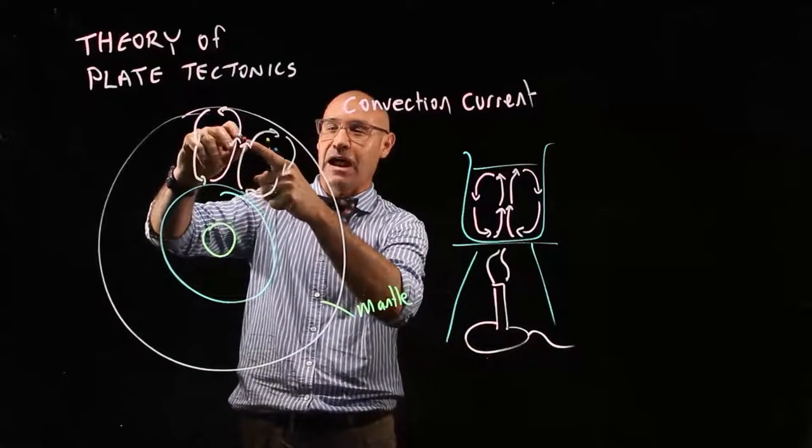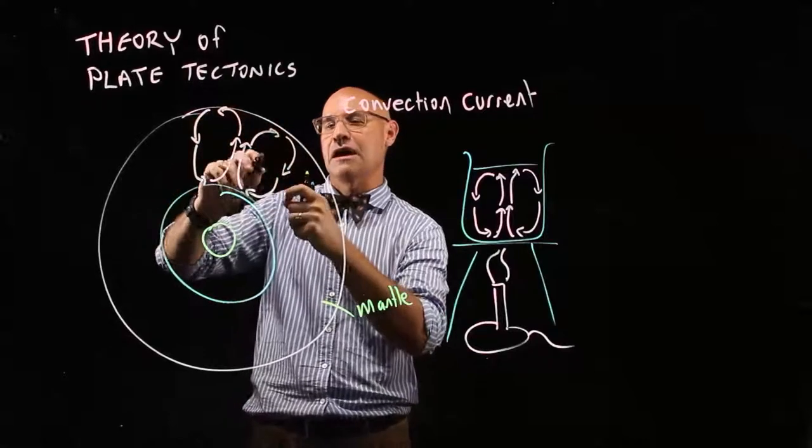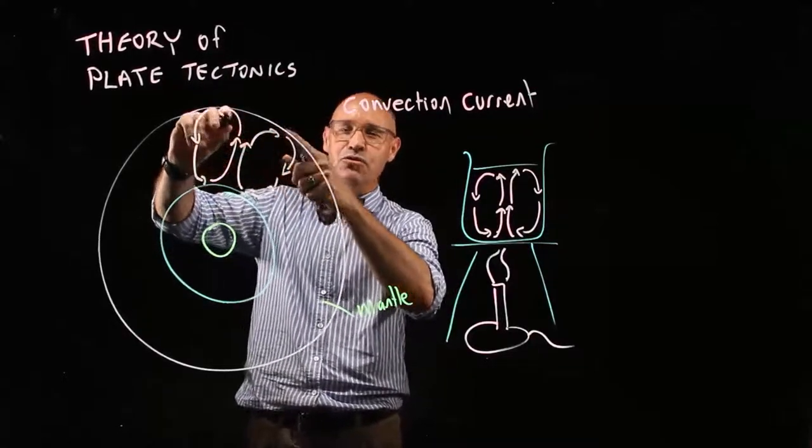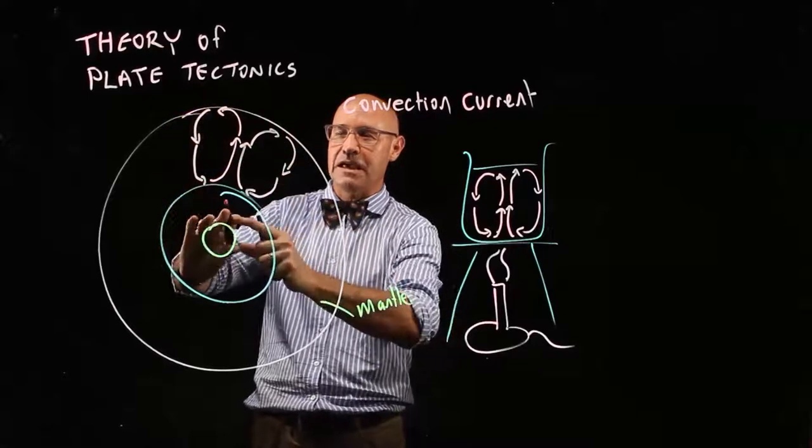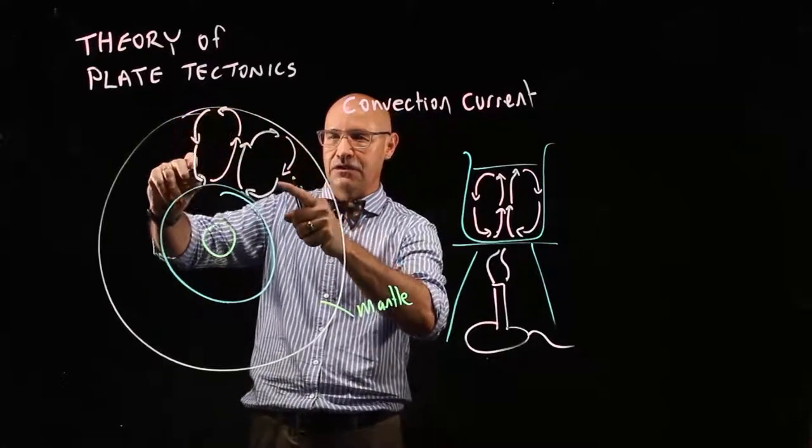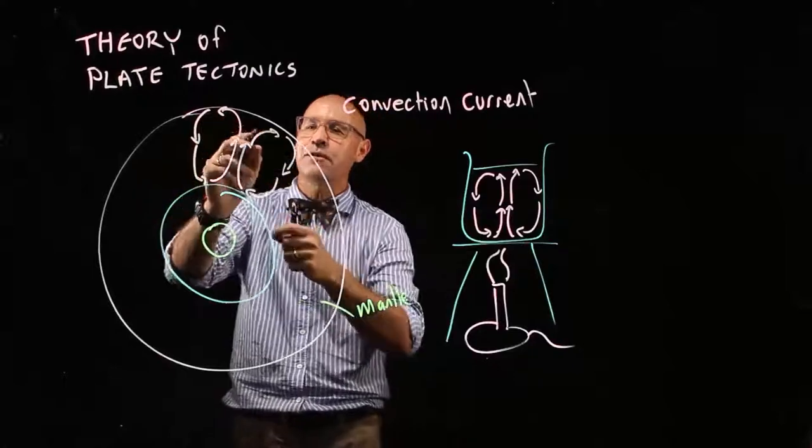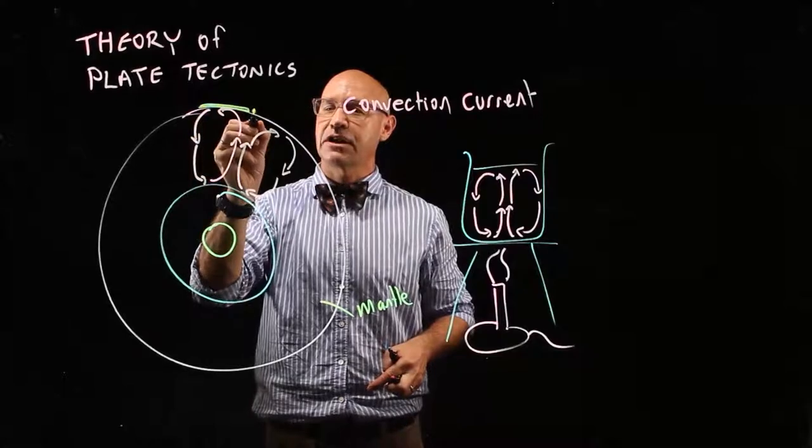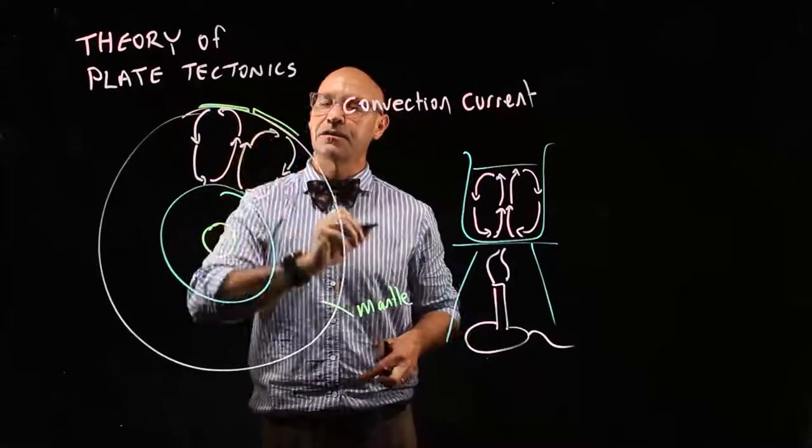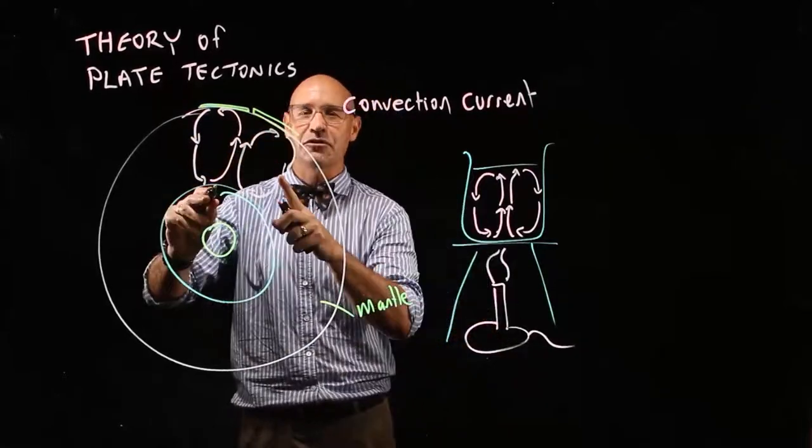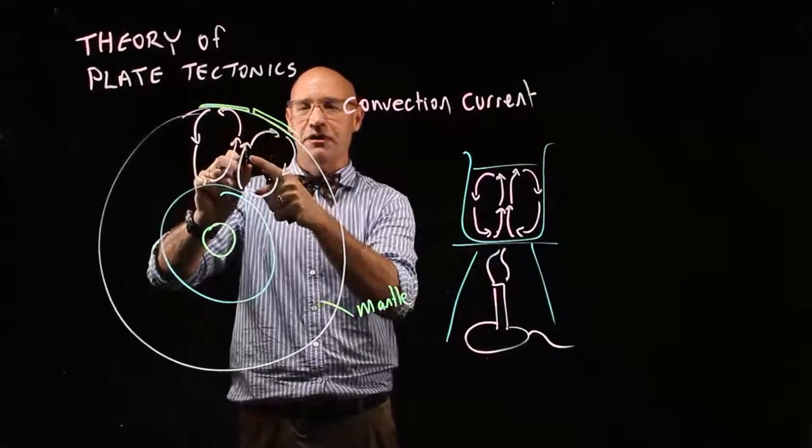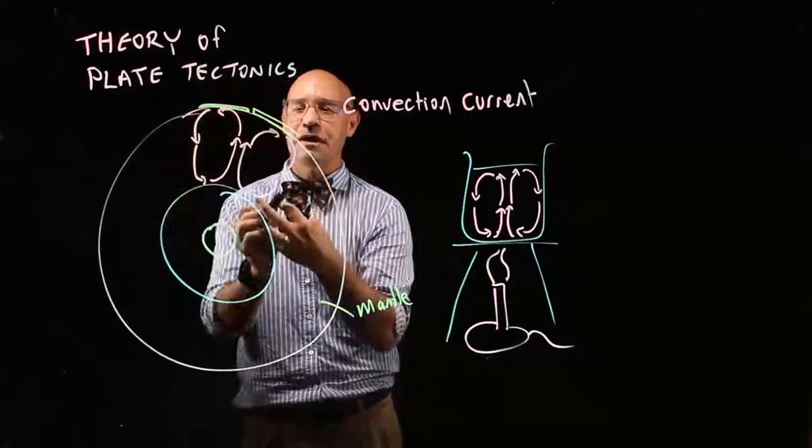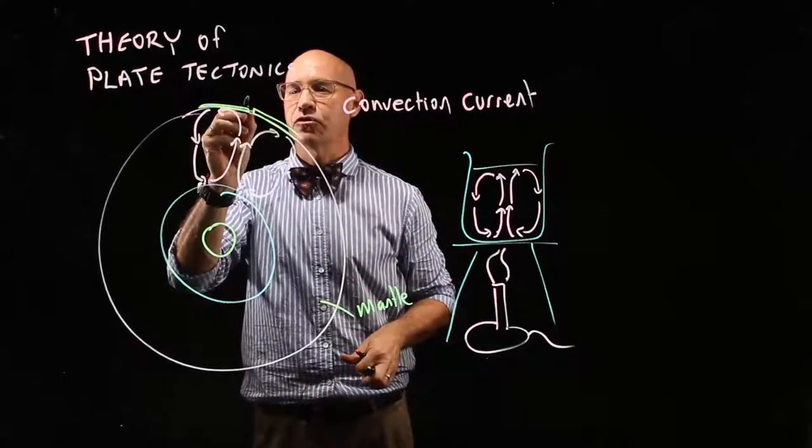So therefore, it goes up to the crust. And as it cools down away from the heat source, it sinks like this. So if we've got a tectonic plate here on the crust, and then another one here, the theory of plate tectonics says that the movement of this magma through the convection current is going to separate these two plates.